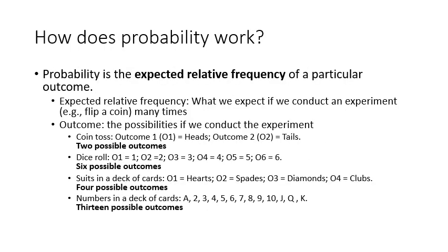So how does probability work? Probability is the expected relative frequency of a particular outcome. And all we mean by that, looking right here, is expected relative frequency, what we expect if we conduct an experiment such as flip a coin many, many times. The outcome just refers to the range of possibilities if we conduct the experiment. So this will be more clear when we look at these examples.